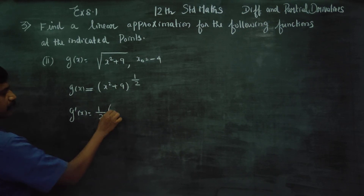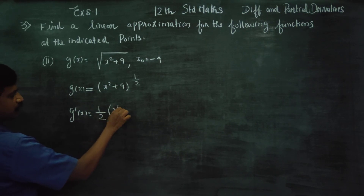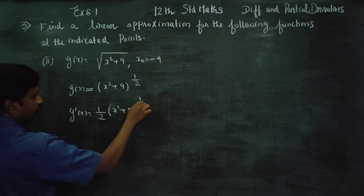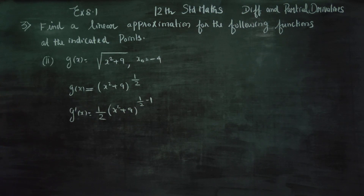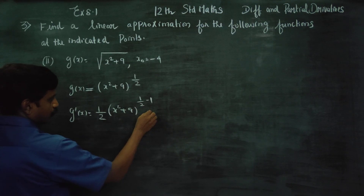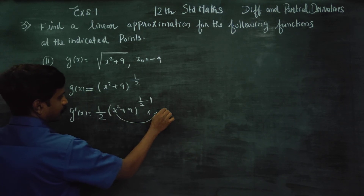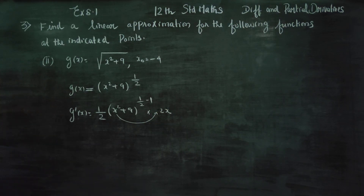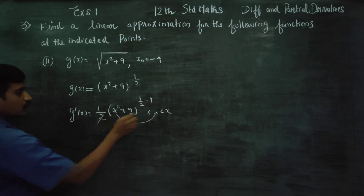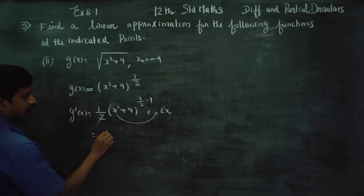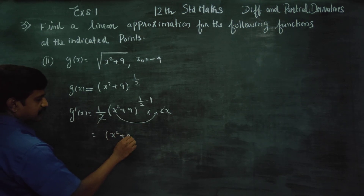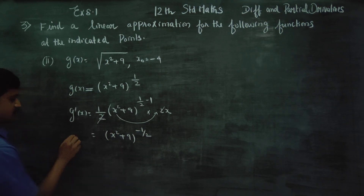Applying the chain rule: g'(x) = (1/2)(x² + 9)^(1/2 - 1) × 2x. The 2 cancels, giving g'(x) = x · (x² + 9)^(-1/2). This is g'(x).